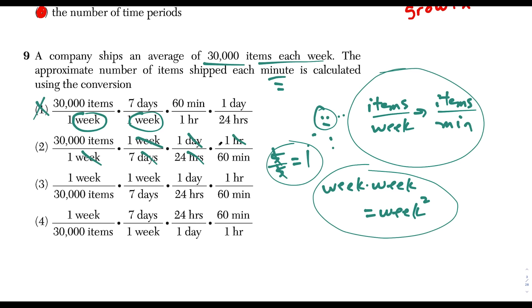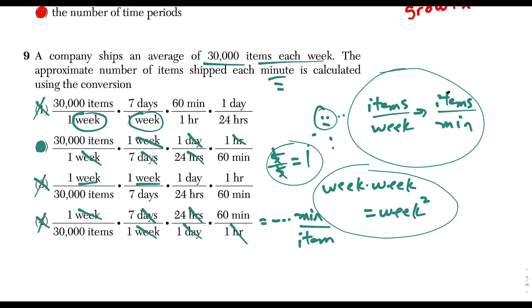Checking the other choices: choice 3 also has weeks times weeks, giving square weeks — that's out. Choice 4 has all units canceling correctly, but the result is minutes per item rather than items per minute — it comes out flipped. So choice 2 is definitely our answer.